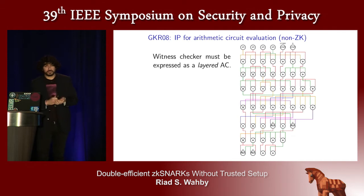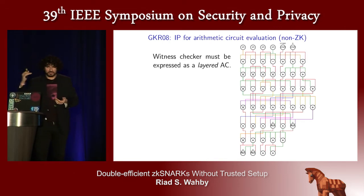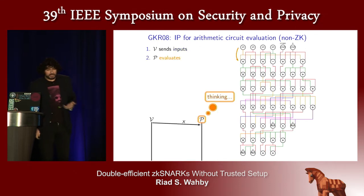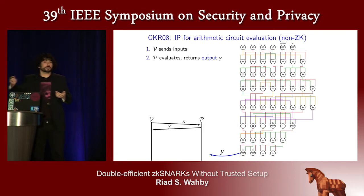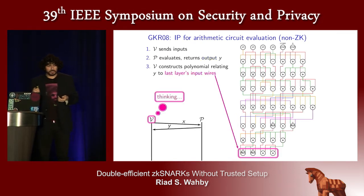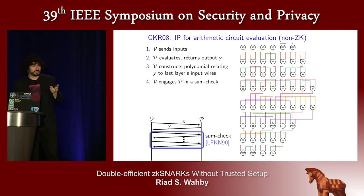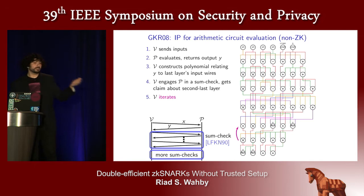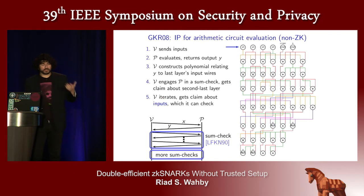Hyrax also builds on the interactive proof line that started with Goldwasser, Kalai, and Rothblum — the Muggles line. This is an interactive proof for layered arithmetic circuit evaluation, where by layered I mean there's a set of inputs that feed one set of gates, whose outputs feed a second set, and so on. To start the proof, the verifier gives some inputs to the prover, and then the prover evaluates the arithmetic circuit to produce some output Y that it returns to the verifier. The verifier constructs a polynomial that relates the purported output Y to the last layer of gates, then engages the prover in a sum check — a kind of interactive proof — which reduces the purported outputs to a claim about the second-to-last layer of the circuit. This iterates until the verifier holds a claim whose truth is just related to the inputs to the computation.